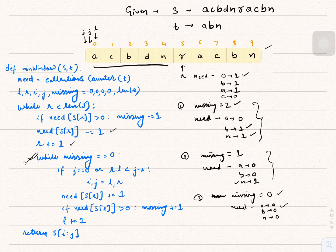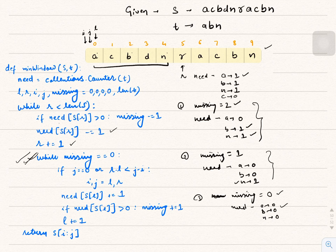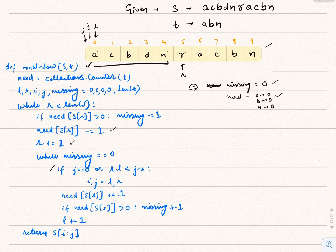We've found a window with all required characters. We enter the shrink while loop. The if condition checks whether J equals 0, meaning this is the first window found. Since it is, we set I and J to L and R — so I=0 and J=5 (pointing to index 5).